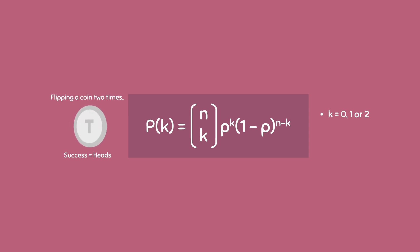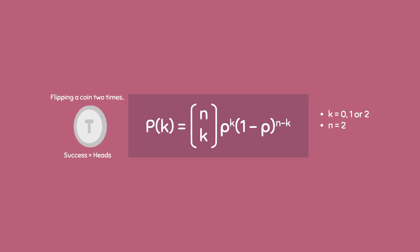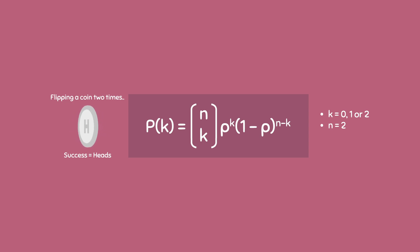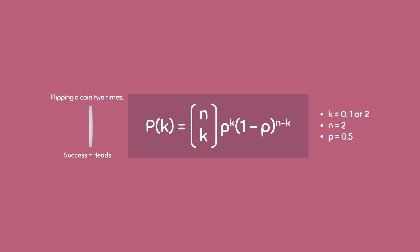It would be impossible for us to get 3 successes — in other words, 3 heads — by only flipping the coin twice. n is equal to 2 because there are 2 trials, and we know this because we are flipping the coin for a total of 2 times. Little p is equal to 0.5 because there is a 50% chance of getting heads, in other words a 50% chance of getting a success.